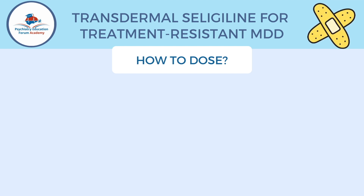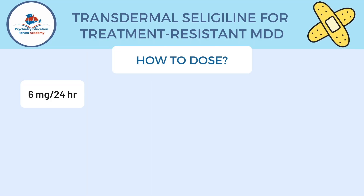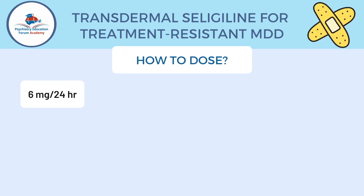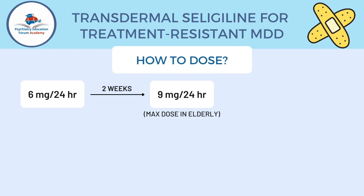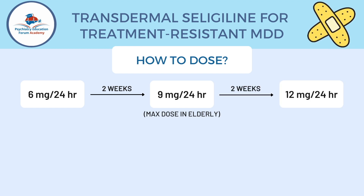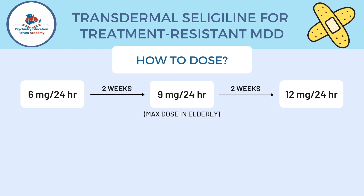The three doses are 6, 9, and 12 milligram patches. Each patch is 24-hour duration, so every day you remove the patch. The starting dose is 6 milligram per 24-hour patch — that's the lowest you start with. If response is not seen in two weeks, you can increase to the next dose of 9 milligram. Keep in mind that 9 milligrams is the max dose for elderly, but for age less than 60, you can go beyond that every two weeks to reach the max dose of 12 milligram per 24-hour patch.